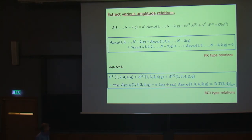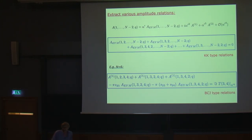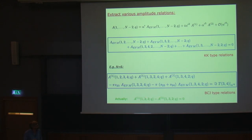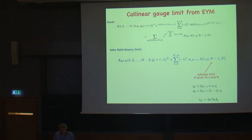At the next leading order, which is α′², we expect a BCJ-like relation. Indeed, this combination looks like a BCJ relation. However, there are additional terms coming from this pure imaginary part, which is non-zero, and a contribution from the tube. This means we get corrections to BCJ relations. Note that the imaginary terms are non-zero; you can see for the five-point case that this relation holds, which is not the KK relation because the KK relation would have a plus sign here.